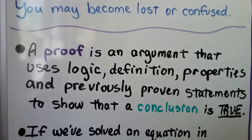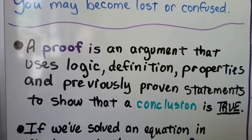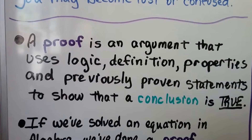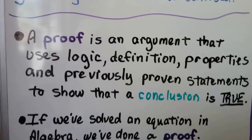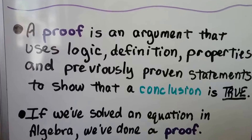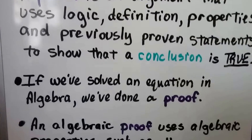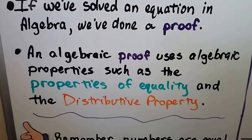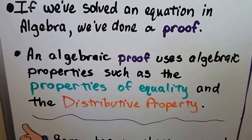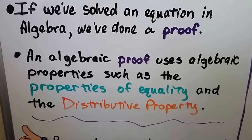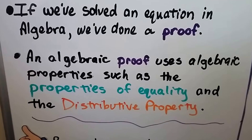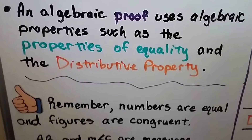A proof is an argument that uses logic, definitions, properties, and previously proven statements to show that a conclusion is true. And if we've solved an equation in algebra, we've done a proof. An algebraic proof uses algebraic properties, such as the properties of equality and the distributive property.